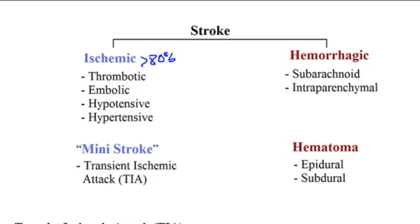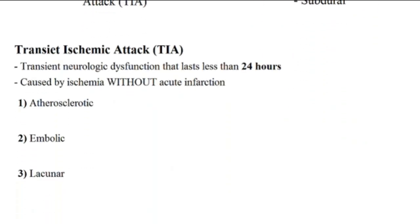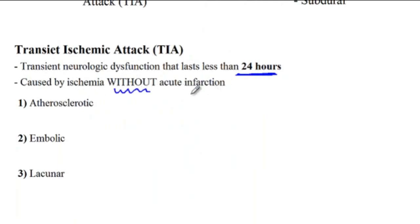Starting with TIA. TIA is a transient neurologic dysfunction that lasts less than 24 hours, and it's due to the temporary blockage in the vessels that are supplying the brain. So it's caused by ischemia without acute infarction. There are three different forms of TIA.